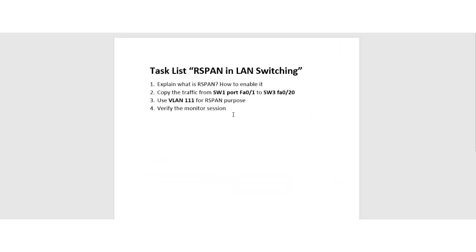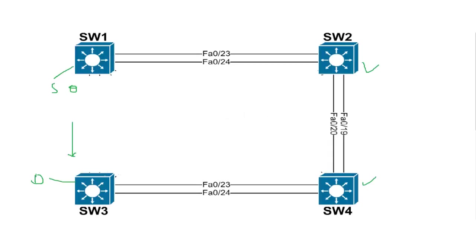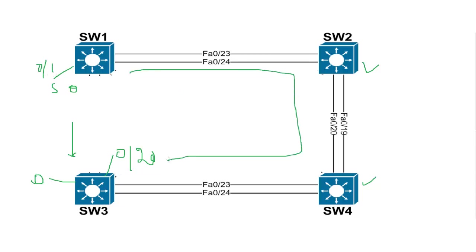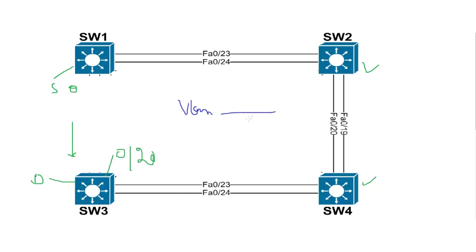In the task list: first I'll explain what R-SPAN is and how to enable it. Second, I'll capture the traffic from Switch 1 port zero slash one and send it to Switch 3 port zero slash twenty. The way to copy this traffic is by using a VLAN.